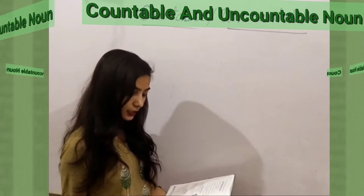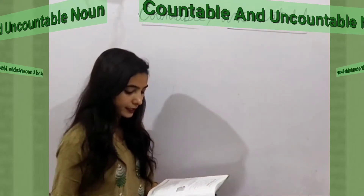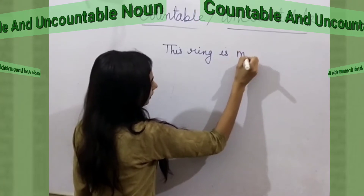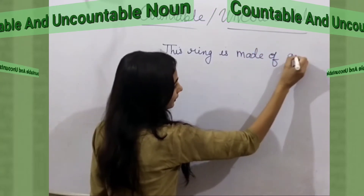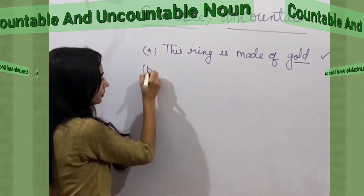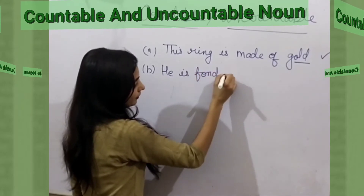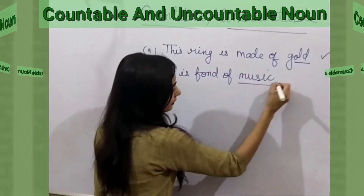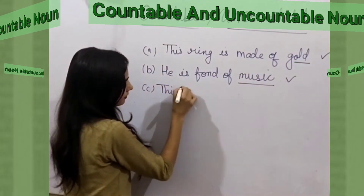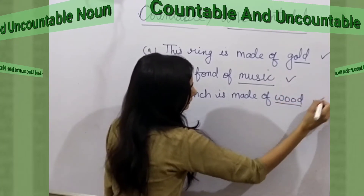Next question, question number 13: Underline the uncountable nouns, then put a tick against the correct sentences. First: 'This ring is made of gold' — not 'a gold.' Gold is the uncountable noun. Next: 'He is fond of music' — not 'a music.' Next: 'This bench is made of wood' — wood is the uncountable noun, and we tick this one.